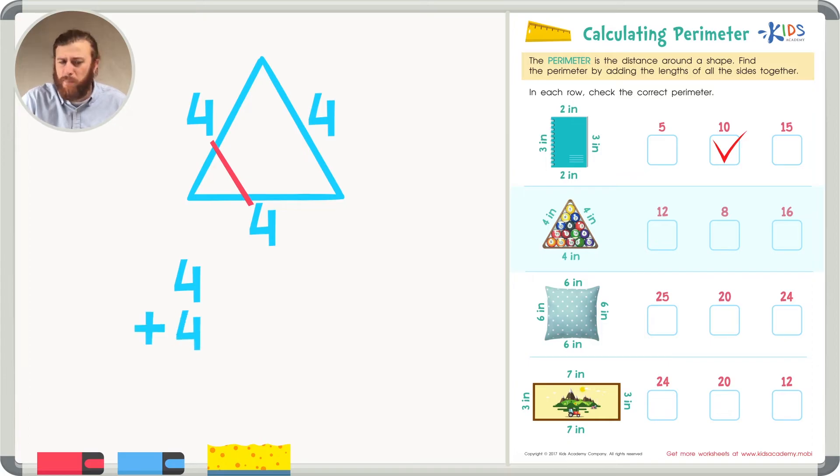So, let's add four plus four. Four plus four is easy. You should know your doubles. Four, five, six, seven, eight. Four plus four is eight. Now, all you have to do is add this other four to the sum of four plus four. Now, we'll be adding eight plus four.